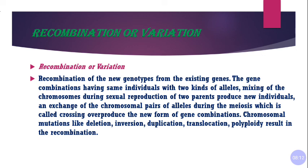Another thing that causes recombination and variations is chromosomal mutations. Chromosomal mutations are different — such as polyploidy, deletion, duplication, inversion, and translocation. All these chromosomal mutations — whenever polyploidy, deletion, duplication, inversion, or translocation occurs — they produce variations, and those variations help in the formation of new species.